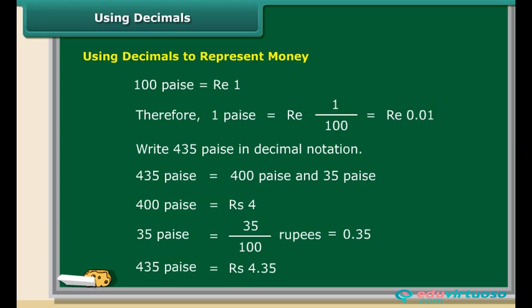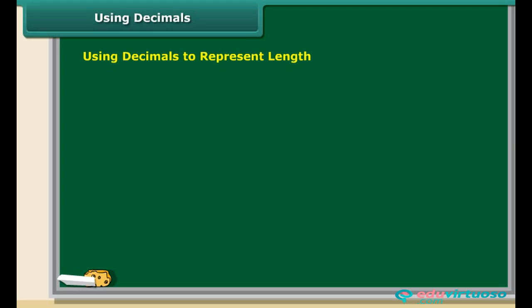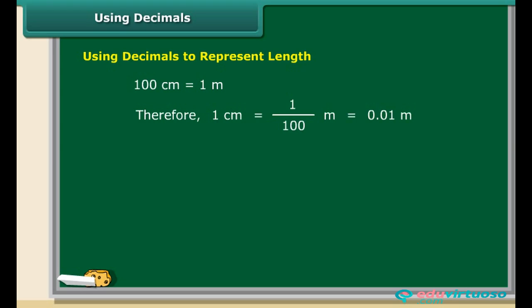Similarly, length can also be expressed in decimals. We know that 100 centimetres are equal to one metre, which means one centimetre is equal to one hundredth of a metre. Let us use decimal notation to write 925 centimetres.